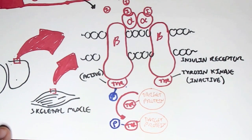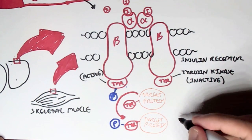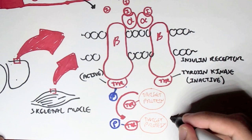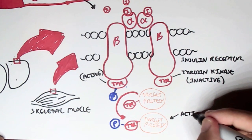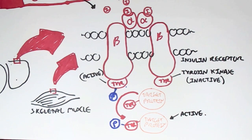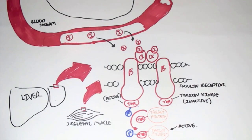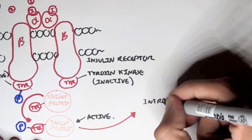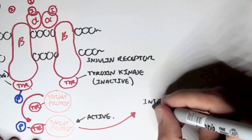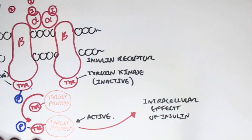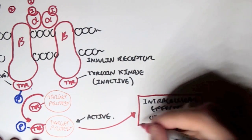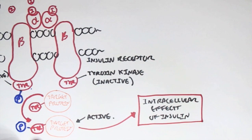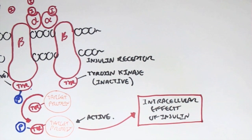The target protein will become phosphorylated — with the phosphate group attached to the tyrosine amino acid — and because it is now phosphorylated it is active. Because it is active, it can then cause the intracellular effects of insulin. Now let's look at this tyrosine kinase receptor in a bit more detail.